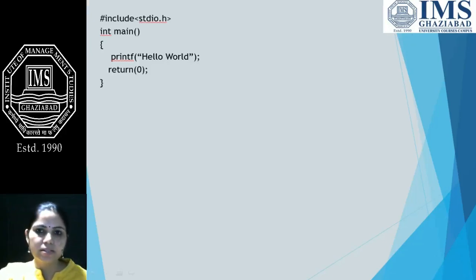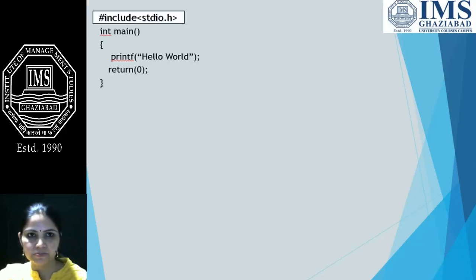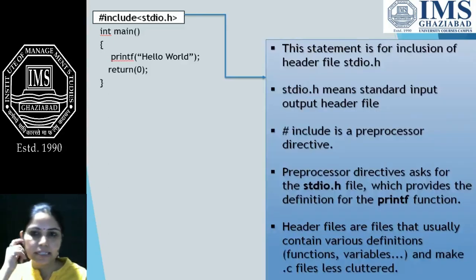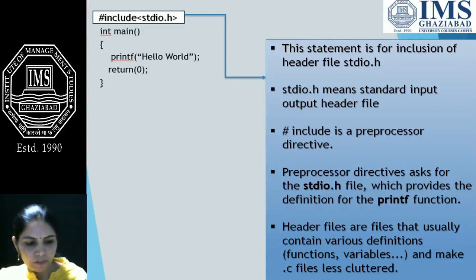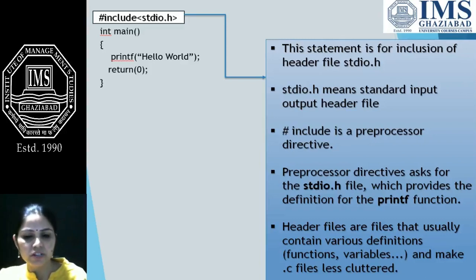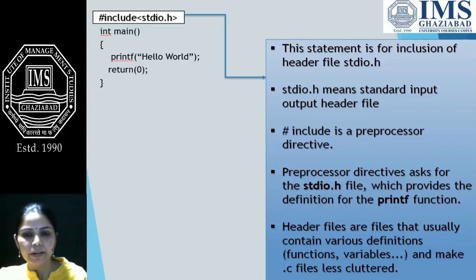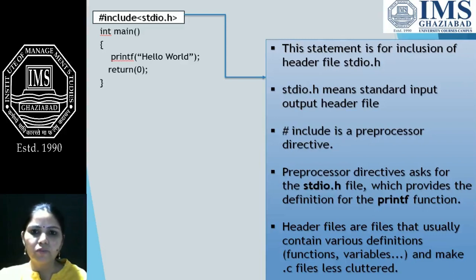Now let us understand what each and every statement means. The first statement is hash include stdio.h. This statement is for inclusion of the header file stdio.h. Header files are already predefined files in which we have definitions of certain functions, and those functions are used in our program. Hash include stdio.h is the statement for inclusion of header file stdio.h. The full form of stdio.h is Standard Input Output header file.